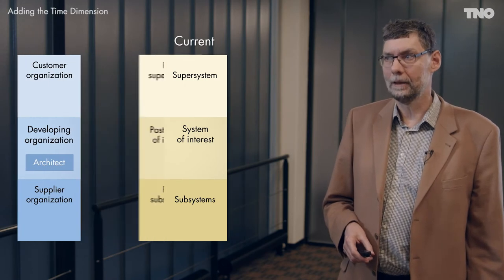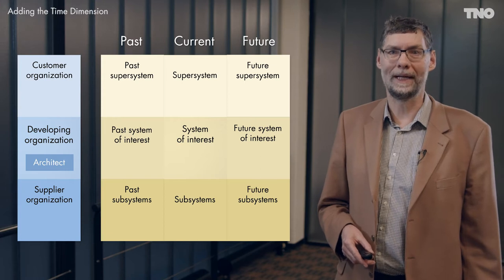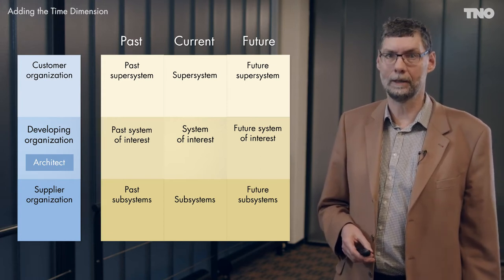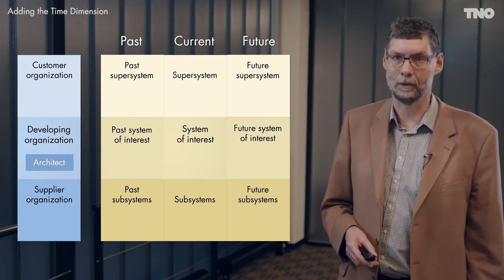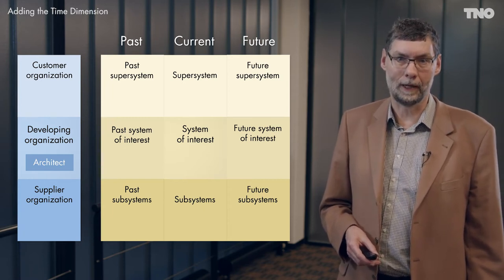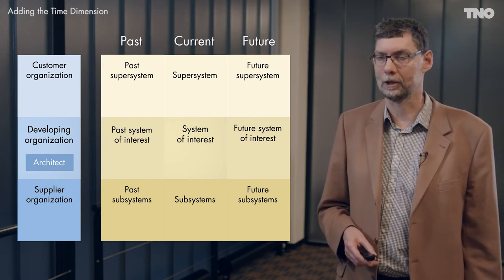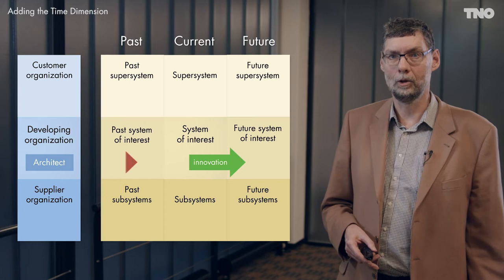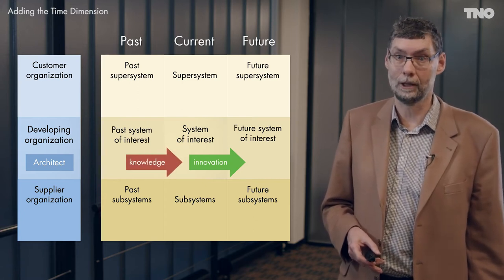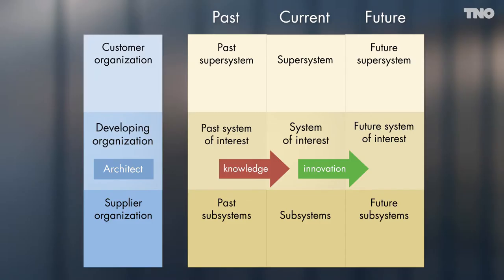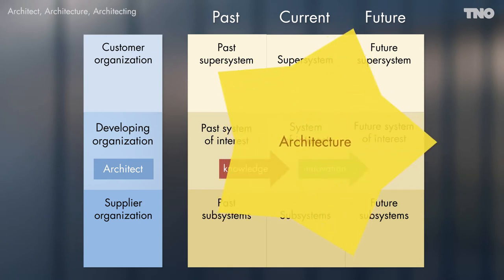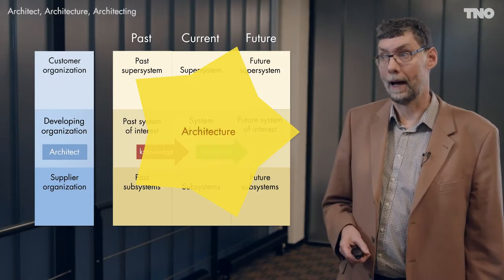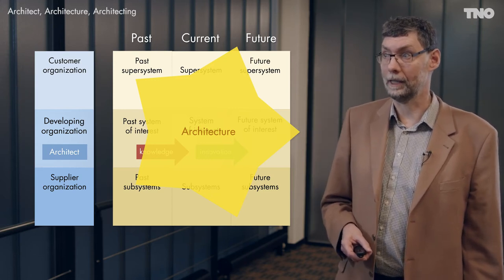We can add the time dimension, and we see that when we build a system we already have a past — past systems. In the case of Philips Lighting, they already make fixtures, lamps, control systems, and electronics. These past systems provide knowledge for current and future systems. If we want to develop a new system like The Edge, we need to innovate and acquire new knowledge to make a future system that fits future needs using future technology. The architecture describes and defines how the system fits in the broader context, how it is designed using subsystems, and how it benefits from past knowledge and will function in future systems.